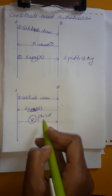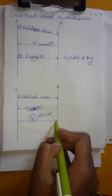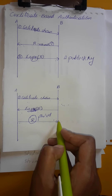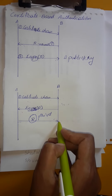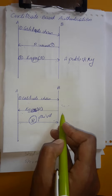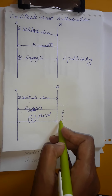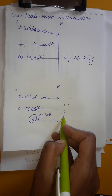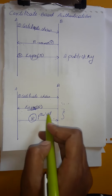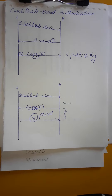The decrypted result will be sent to B. After receiving that, B is going to check whether the received nonce and whatever nonce he originally generated are equal. If both are equal, the mutual authentication has been completed.